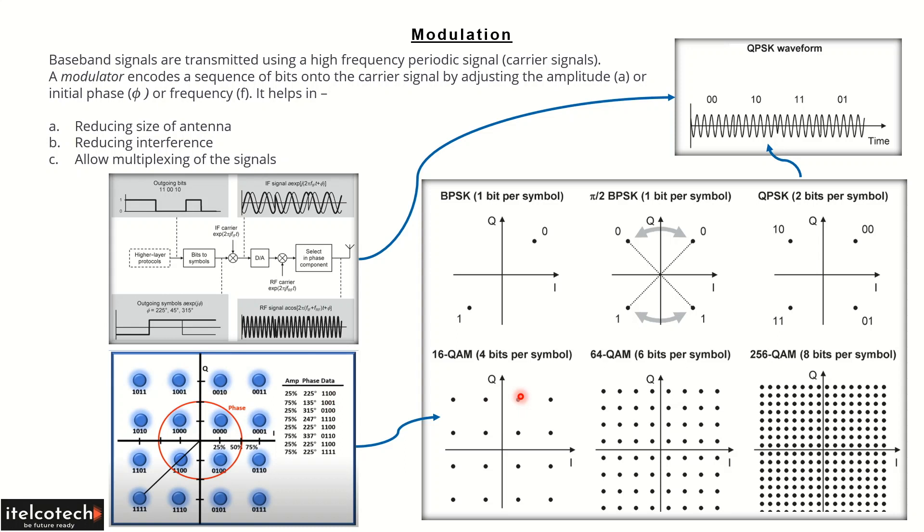This modulation scheme keeps on increasing up till 256-QAM in downlink, and this signifies how fast we can transmit the data. We'll talk about these modulation schemes and the code rate in detail in the next slide.